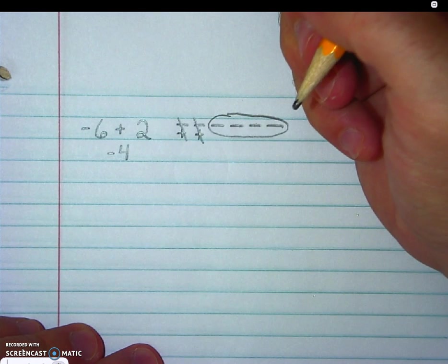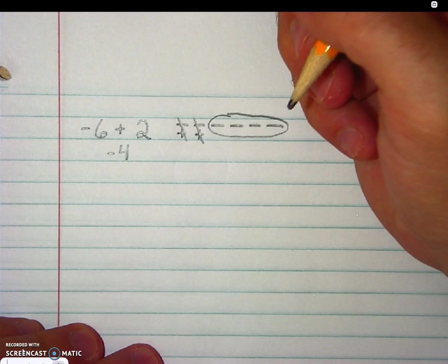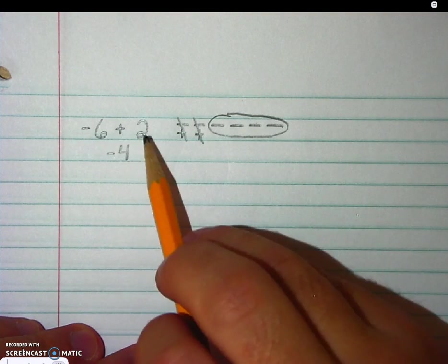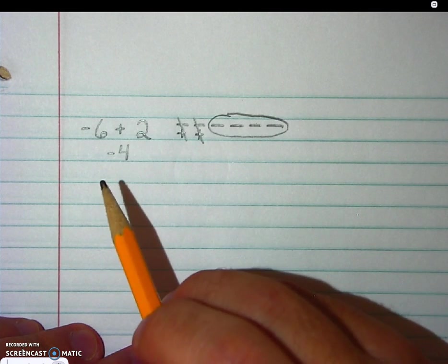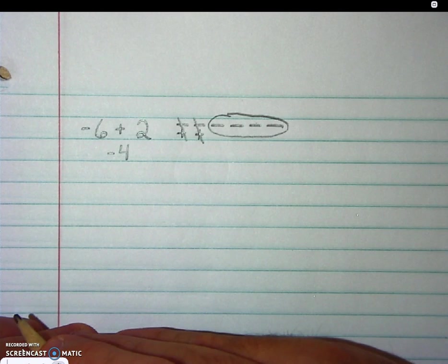I also want to spend just a moment talking about the rule whenever we're combining unlike integers. And the rule says that whatever the two numbers are there, we subtract their absolute value.